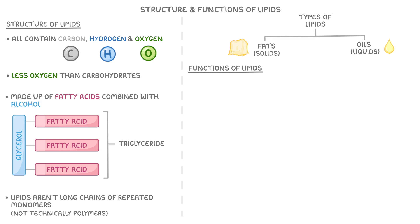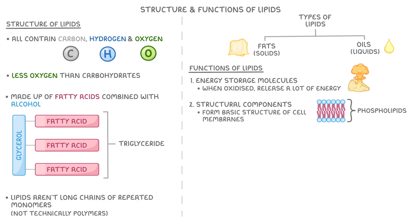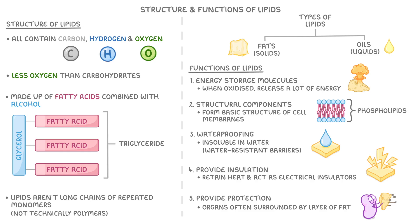In living organisms, there are several key functions of lipids. First, they're major energy storage molecules because when they're oxidised, they release a lot of energy that we can then use. They're also vital structural components, especially phospholipids, which form the basic structure of our cell membranes. Lipids are great for waterproofing because they're insoluble in water, so they can form water-resistant barriers. They also provide insulation, helping us to retain heat and sometimes act as electrical insulators — for instance, the lipid layer around nerve cells helps with nerve impulse transmission. And finally, lipids provide protection, which is why our organs are often surrounded by a layer of fat that acts to cushion them.